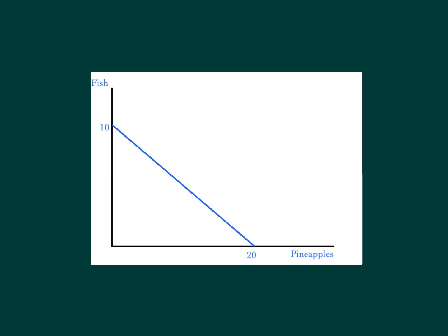Here we see a slightly different looking PPF — one that has a straight line. This represents a constant marginal opportunity cost: every time I give up some fish and get some pineapples, it's the exact same amount. The opportunity cost is actually the slope of the PPF. When we had the curved PPF, the slope was getting steeper and steeper moving in one direction. But with a straight line, we give up the exact same amount of fish for every additional pineapple. When we get to comparative advantage, we'll actually calculate these opportunity costs.